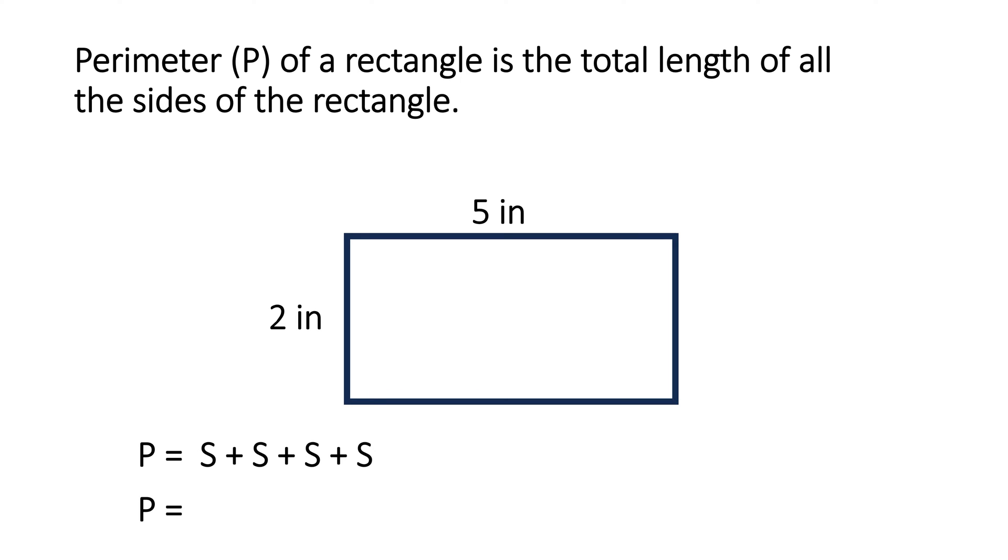Let's fill in the values. We will start from the top, and 5 inches plus 2 inches plus 5 inches plus 2 inches equals 14 inches. This is the perimeter.